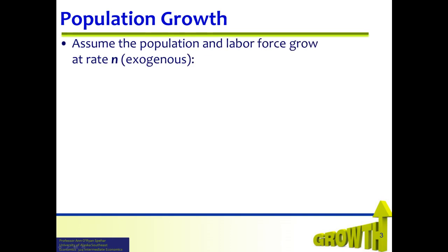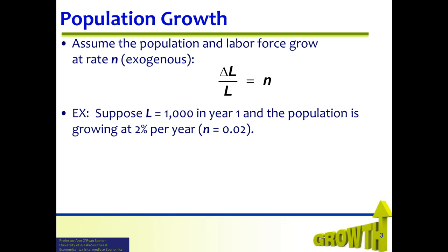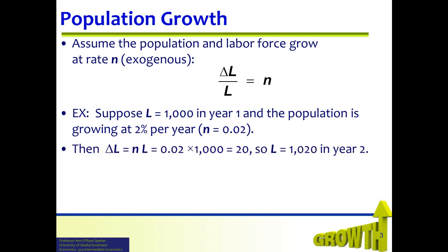Assume the population and the labor force grow at rate n as an exogenous parameter. We define the constant change in population growth as the change in total labor divided by total labor. Suppose for example that total labor available is one thousand in year one and the population is growing at two percent per year, meaning n equals 0.02. Then the change in labor is n times L, which equals 0.02 times one thousand, which equals twenty. So L in year two is one thousand and twenty.